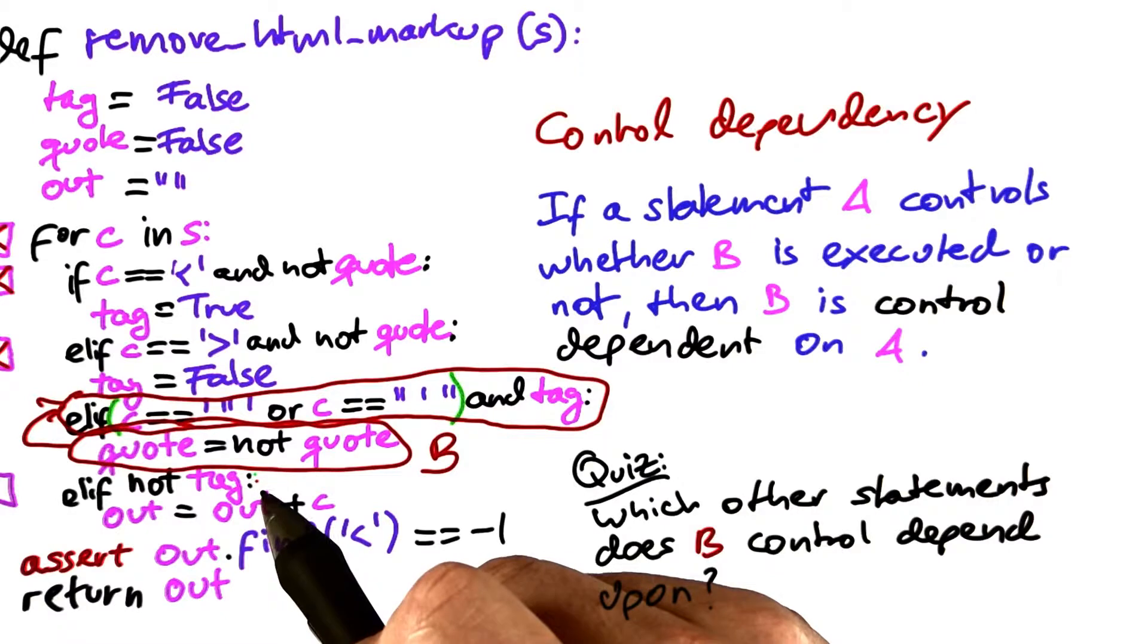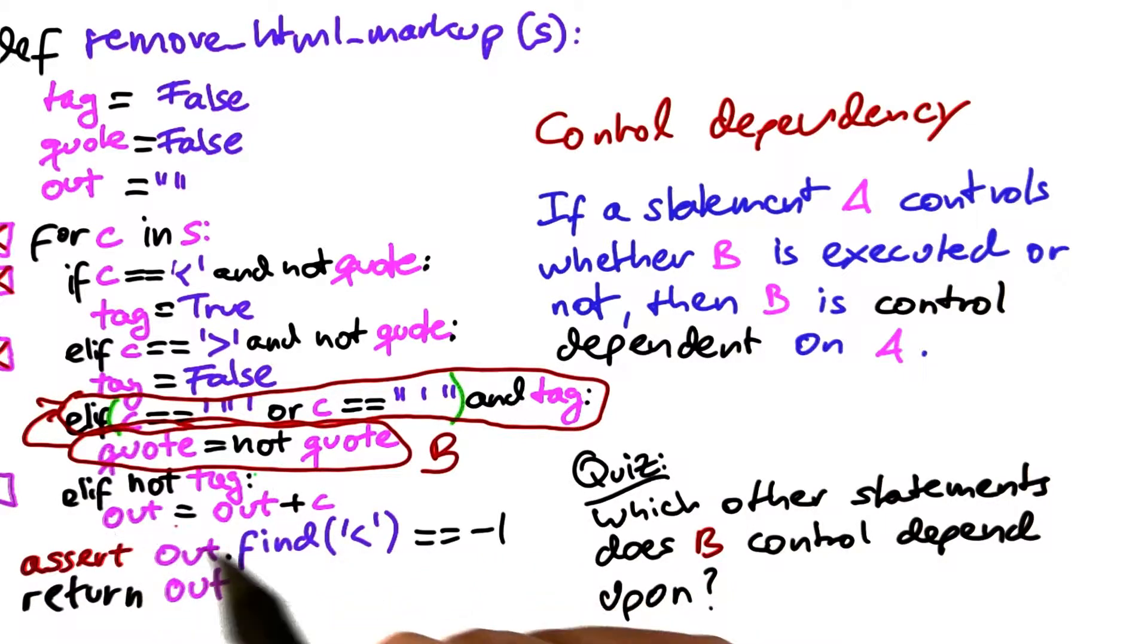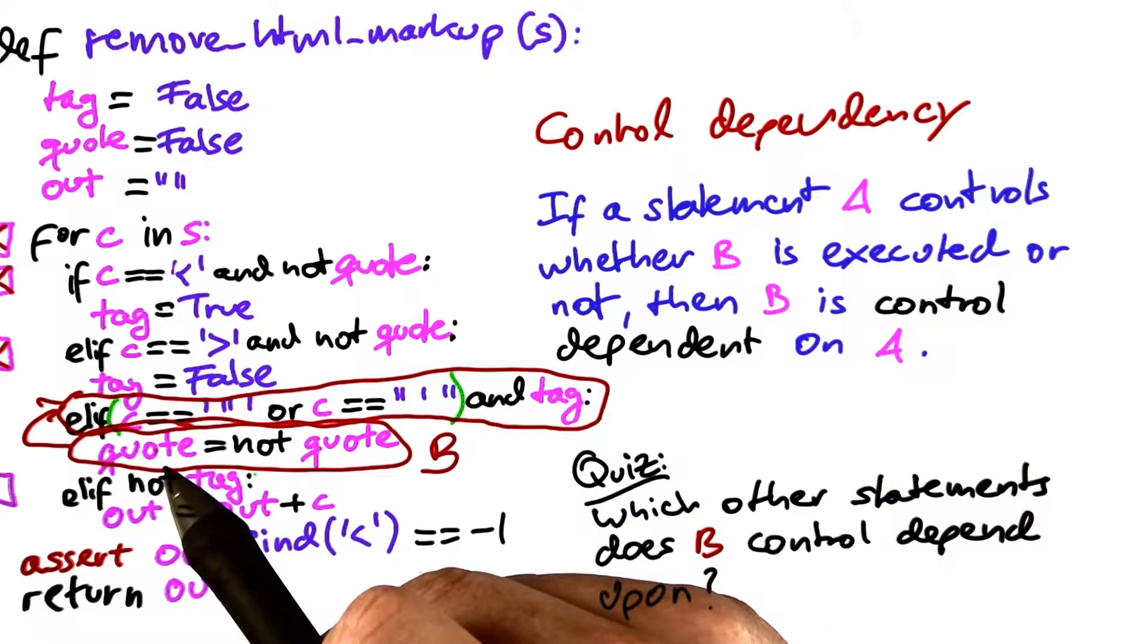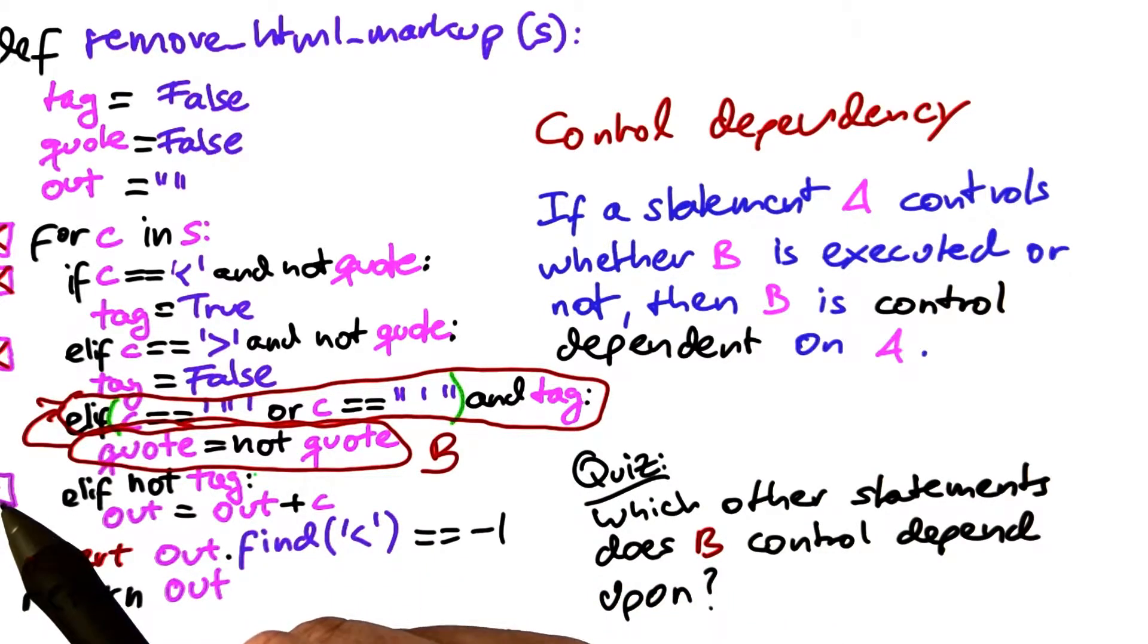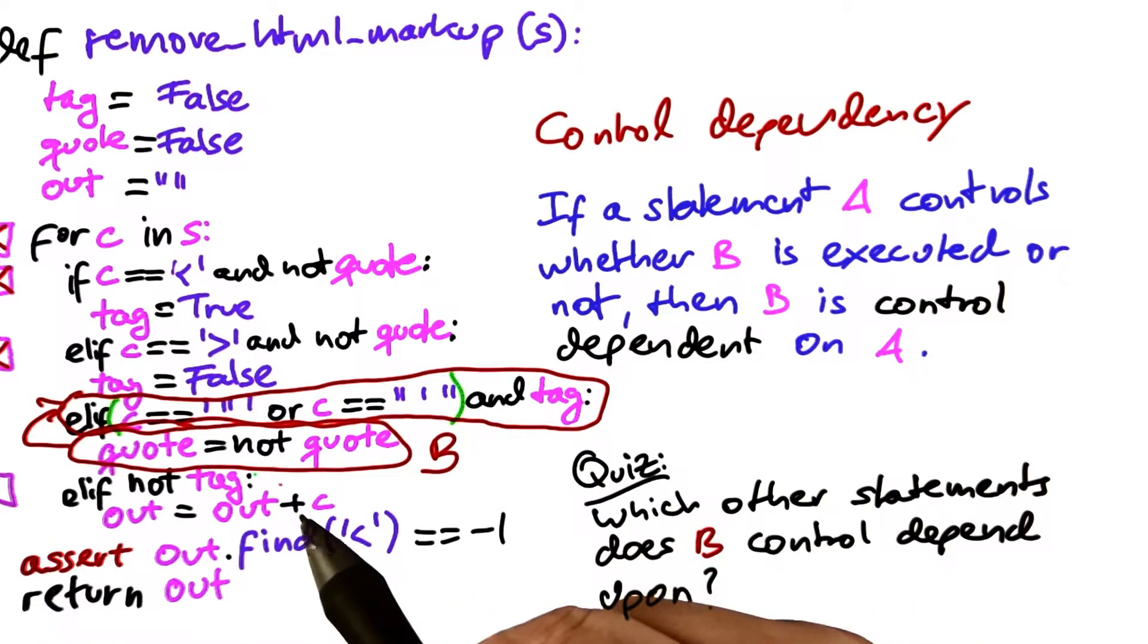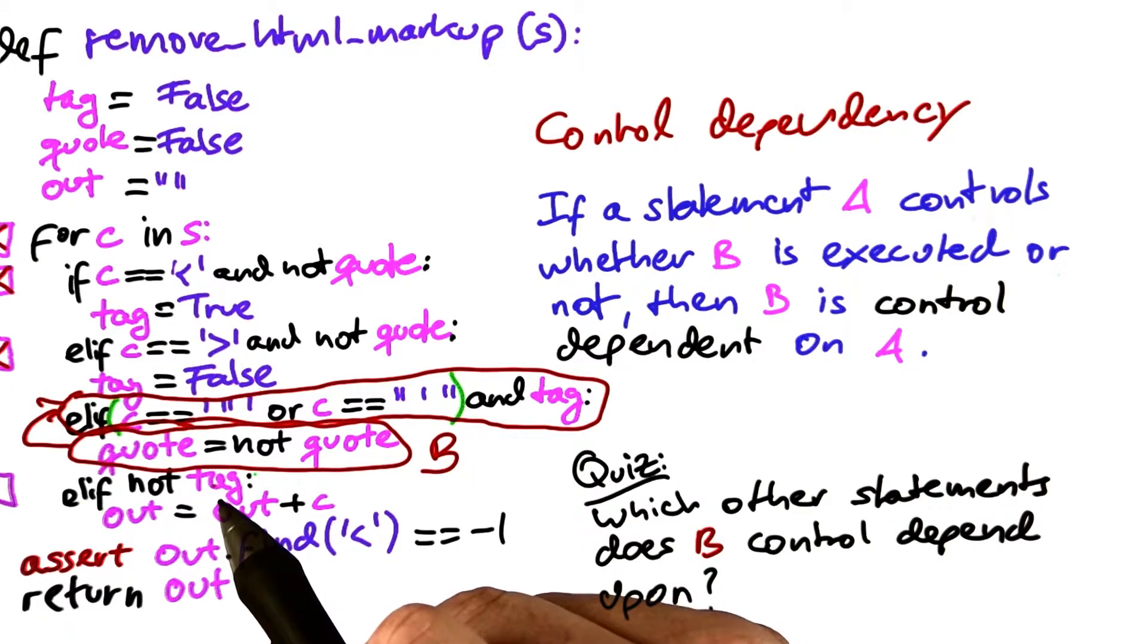The last condition, however, only controls whether the character will be added to out or not. It has no influence on whether the quote is being set or not. Therefore, this statement does not influence whether b is executed or not. b is not control dependent on it.